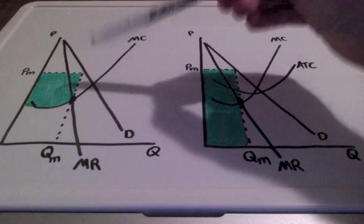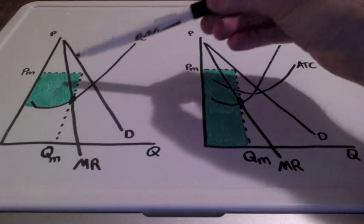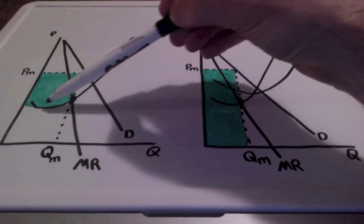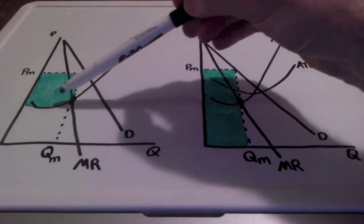So we correctly identify this and label it by bringing the price all the way down to where it's touching marginal cost.